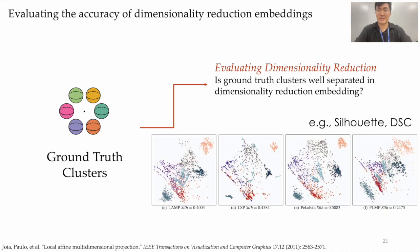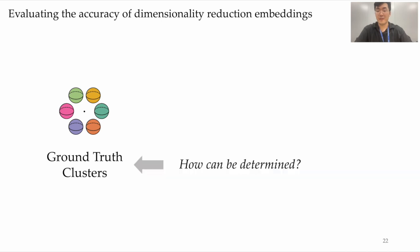These metrics measure how accurately the ground-truth clusters are separated in the reduced space. Metrics like Silhouette or DSC are popular choices. Higher Silhouette scores, indicative of better clustering of ground-truth clusters, imply a better reduction. But how do we define these ground-truth clusters? Typically, class labels are treated as ground-truth clusters, operating on the assumption that these labels represent distinct clusters in the original high-dimensional data.